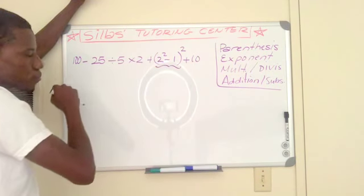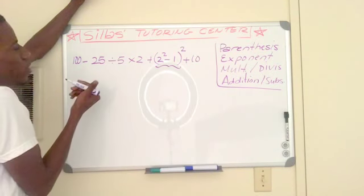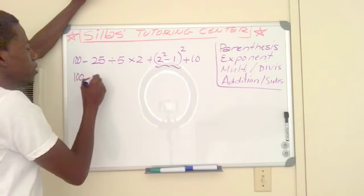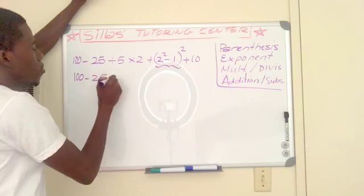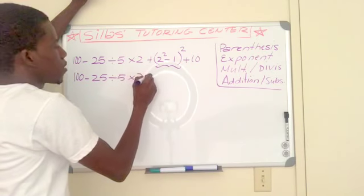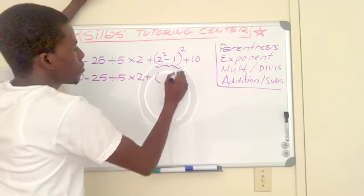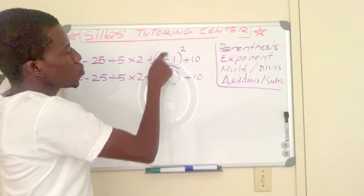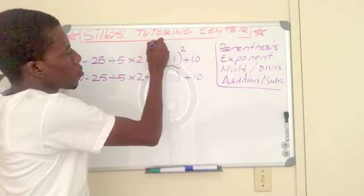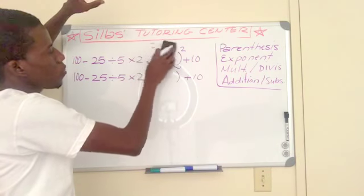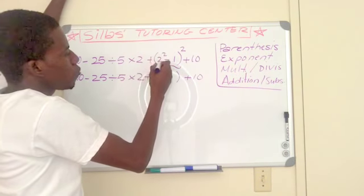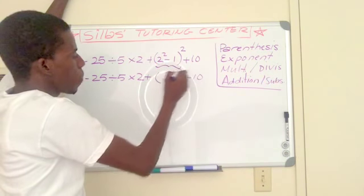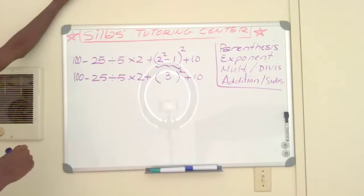I'm going to leave everything as is and just do my parenthesis. So two squared is two times two, that's four. Four minus one is three.